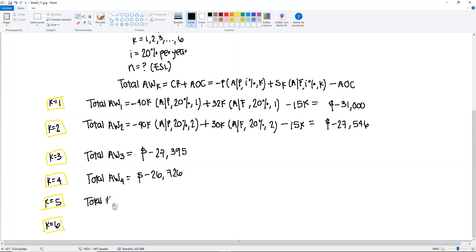The total annual worth for year 5 will be minus 26,897. Note that it was decreasing and now it starts increasing after year 4. So the last one, total annual worth of year 6 will give us a total of minus 27,028.